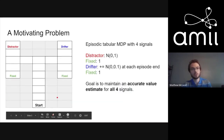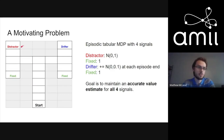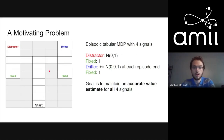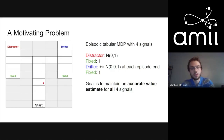To start, let's consider a motivating problem. Imagine you have an episodic tabular MDP with four terminating states and four signals of interest. When the agent moves into the distractor it gets a mean-zero, variance-one random value. When it moves into a fixed cell it sees a value of one. The drifter is a target that gets a random walk process with mean-zero variance 0.1 added at the end of every episode. The high-level goal is to maintain an accurate value estimate for all four signals.